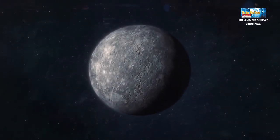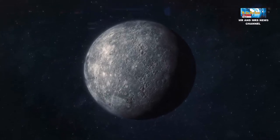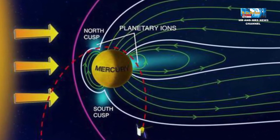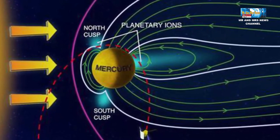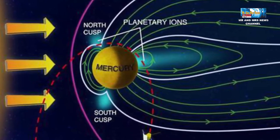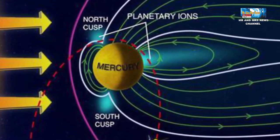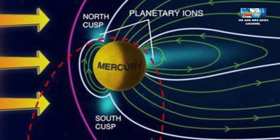Merkurius memiliki medan magnet aktif, terutama di belahan planet sebelah utara. Medan magnet ini memang hanya 1% dibanding dengan medan magnet di Bumi. Namun, ini sudah cukup untuk menarik beberapa partikel dari matahari dan membentuk angin solar panas pada permukaan Merkurius.